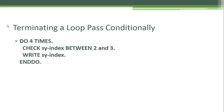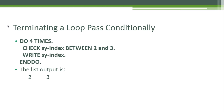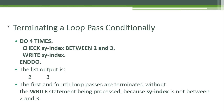To terminate a loop pass conditionally: DO four times, and use CHECK if SY-INDEX is between 2 and 3, then WRITE SY-INDEX. SY-INDEX is the system variable indicating which loop pass we are on — first, second, third, or fourth. So if SY-INDEX is between 2 and 3, we write it. The output should be only 2 and 3, as the first and fourth loop passes are terminated without the WRITE statement being processed.